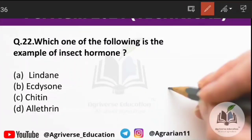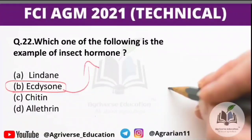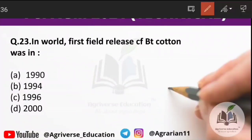Question 22: which of the following is an example of an insect hormone? The right answer is option B — ecdysone. Ecdysone is basically the molting hormone of an insect.